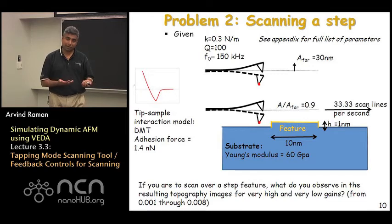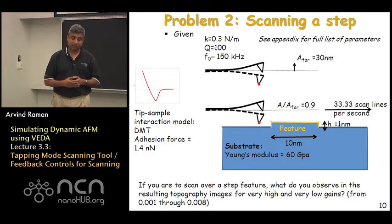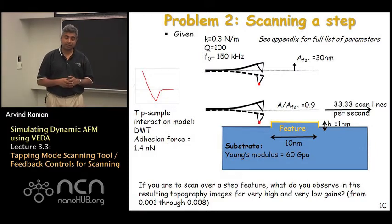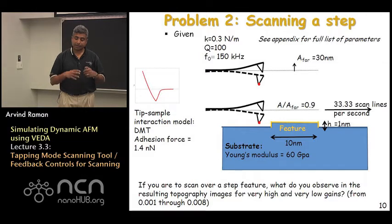And here what we are doing is we have a softer cantilever, 0.3 Newton per meter, lower Q factor. The natural frequency is 150 kilohertz. And the free amplitude is the same as in the previous case.